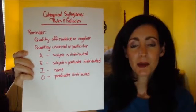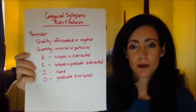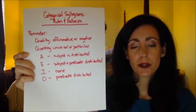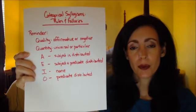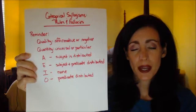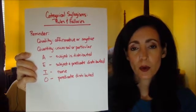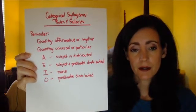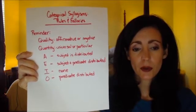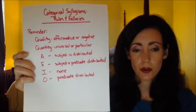Today we're going to be discussing categorical syllogisms, rules, and the fallacies. The rules are very helpful with categorical syllogisms because they give us another way to determine if they are valid or invalid. As part of that process, these rules either apply to the quality, quantity, or to distribution.